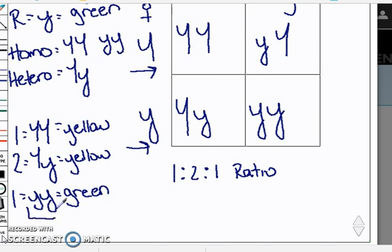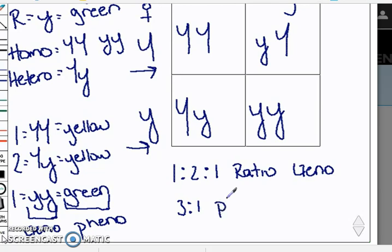Giving you a 1:2:1 ratio. This right here that actually shows the genetic makeup, this is called the genotype. The color that's actually being seen in this case is going to be your phenotype. If you look at genotype and phenotype, this is going to be your ratio for genotype. Your phenotype ratio is going to be 3:1 for phenotype.